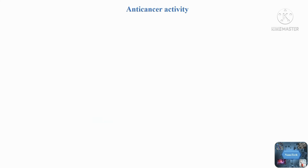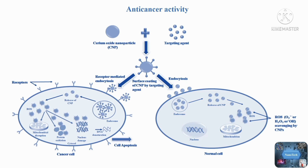Anticancer Activity: In addition to antibacterial and antioxidant activity, nanoceria has been shown to have significant anticancer potential. It protects healthy cells from ROS while killing cancer cells by inducing ROS formation. Cerium oxide nanoparticles show a prooxidant effect in cancer cells by entering into the cell through receptor-mediated endocytosis and getting released into the cytoplasm from the endosome. This acidic intracellular pH favors the SOD mimetic activity of cerium oxide nanoparticles, which reduces superoxide into hydrogen peroxide but inhibits its CAT mimetic activity, resulting in the accumulation of a large amount of hydrogen peroxide in the cancer cell.